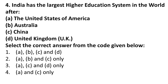The next question is: India has the largest higher education system in the world after — asking the rank of India. We are third ranked in terms of higher education system, behind the United States and China. Remember this — India's education system is third, behind the United States and China. The correct answer is USA and China only.